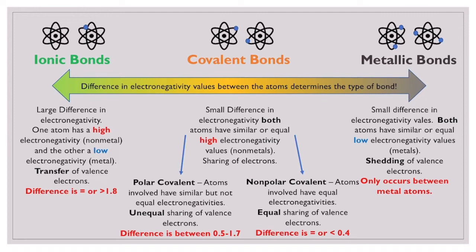On the next slide I'm going to show you a periodic table that gives you an electronegativity value for each element. If we're talking about two different elements, you can take the electronegativity values of each element and find the difference. If the difference of those electronegativity values is equal to or greater than 1.8, then you're going to have an ionic bond forming between those two atoms, because the electronegativity difference is great enough for one atom to take an electron from another atom.